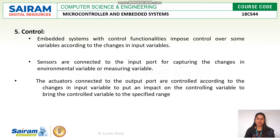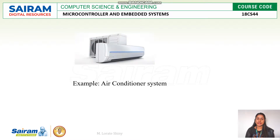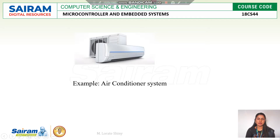An example of an embedded system with control functionality is an air conditioner. In the air conditioner, a sensor senses the room temperature and the air conditioner temperature is set automatically using an actuator. On the input side, the sensor senses room temperature, and according to that, the settings inside the air conditioner are automatically changed.